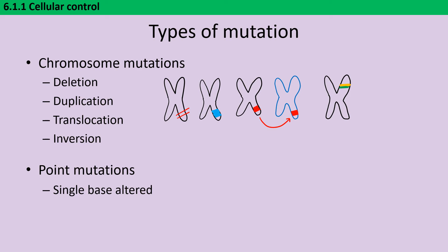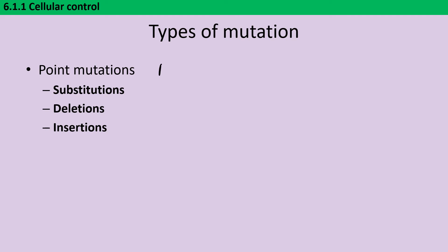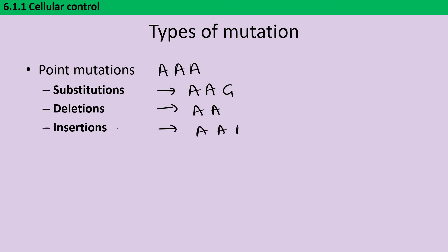Then we also have point mutations. Whereas a chromosome mutation affects lots and lots of bases, a point mutation is the alteration of a single base. Point mutations can be split into three further types: a substitution, where one of the bases is swapped for a different one; a deletion, where something is removed; and an insertion, where something is added in.